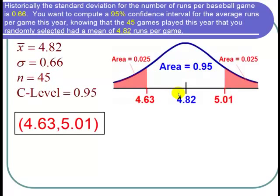So let's look at this on a picture. With a 95% confidence interval, that means the area in between the two bounds of 4.63 and 5.01 should be 0.95, 95% of the total area. So the total outside area should be 5%, or 0.05. Half of that is 0.025. So here's our picture.